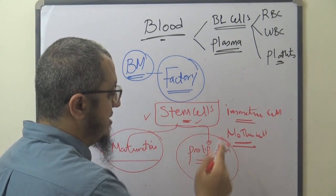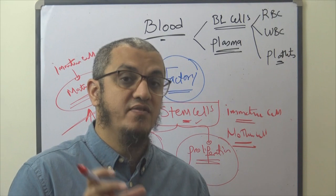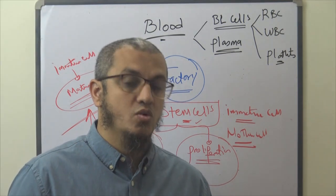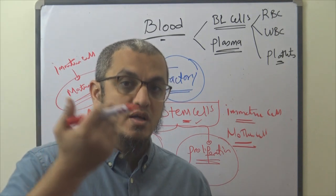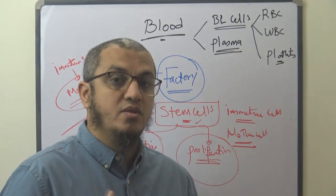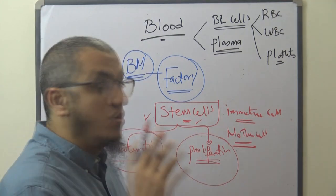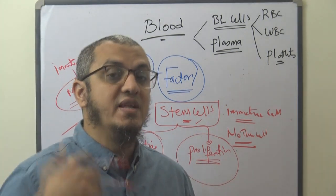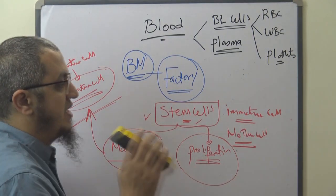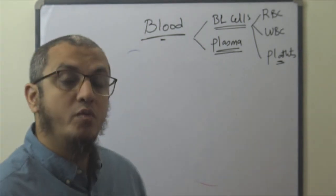The second role is proliferation. When these blood cells have a life span — RBCs about 120 days, white blood cells about seven days — when these cells die, they need to be replaced by new ones. So the stem cells proliferate, multiply, to replace these blood cells. So the two important roles are: maturation, converting immature to mature; and proliferation, to replace the loss of blood cells.